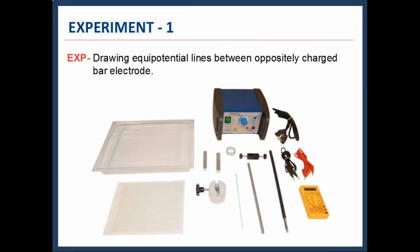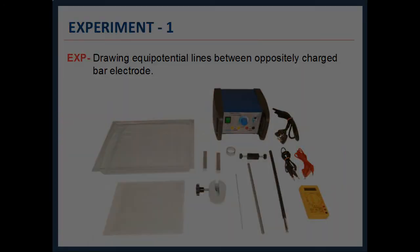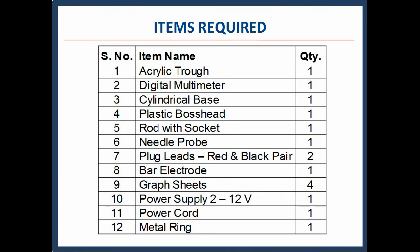In the first experiment, we will draw equipotential lines between two oppositely charged bar electrodes. These are the items required to perform the first experiment: acrylic trough, digital multimeter, cylindrical base, plastic boss head.